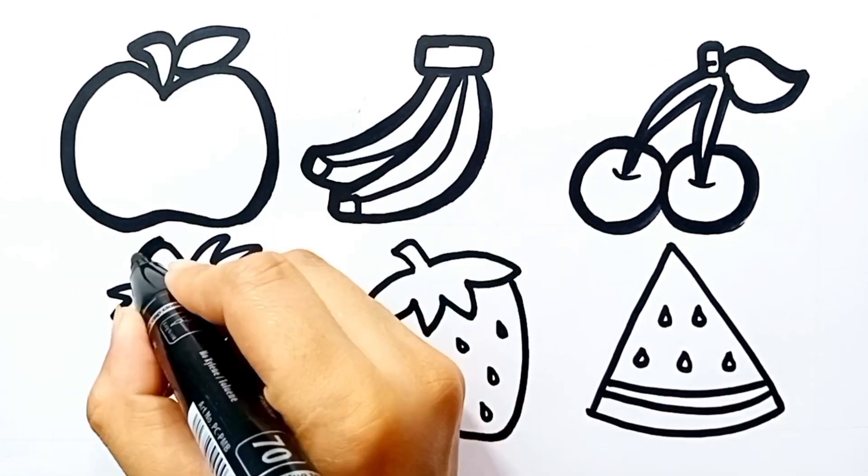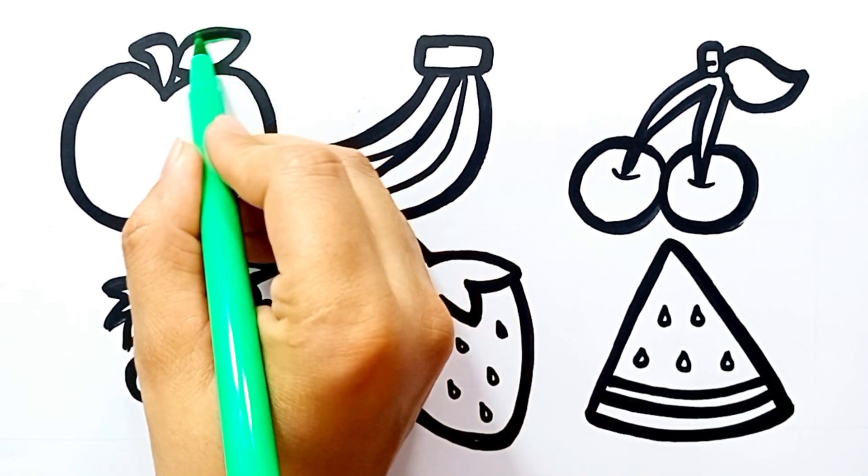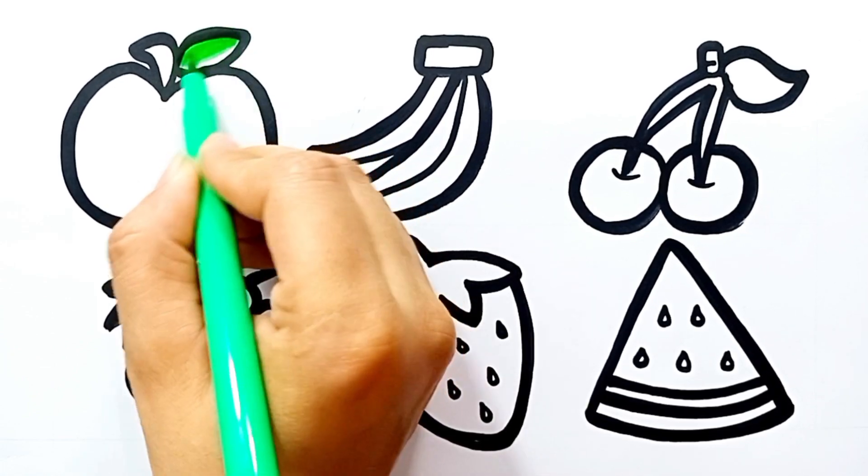Let's add some colors to make it look beautiful. First I am drawing green color in the leaf.